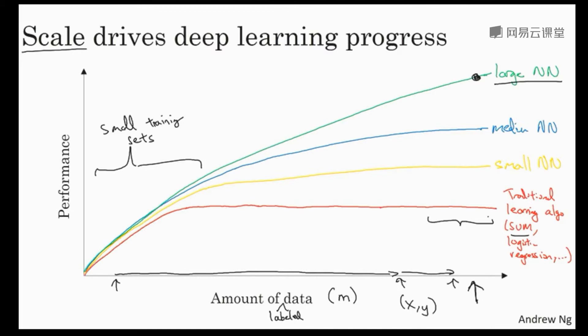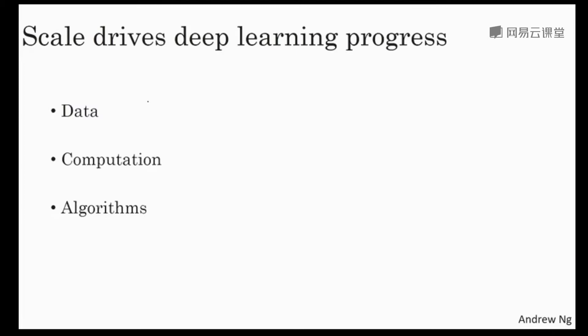And so if any of your friends ask you, why are neural nets taking off? I would encourage you to draw this picture for them as well. So I would say that in the early days in the modern rise of deep learning, it was scale of data and scale of computation, just our ability to train very large neural networks, either on a CPU or a GPU that enabled us to make a lot of progress.